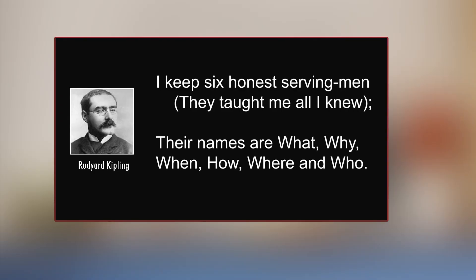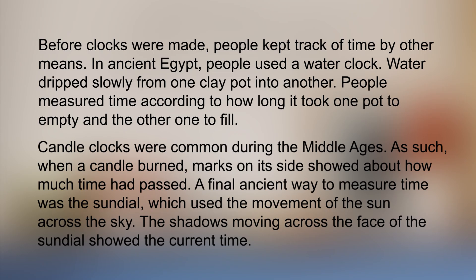In other words, remember Rudyard Kipling's Six Honest Serving Men: I keep six honest serving men, they taught me all I knew, their names are what and why and when and how and where and who. So let us look at the paragraph. Before clocks were made, people kept track of time by other means. In ancient Egypt, people used a water clock — water dripped slowly from one clay pot into another, and people measured time according to how long it took one pot to empty and the other to fill. Candle clocks were common during the middle ages; as a candle burned, marks on its side showed about how much time had passed. A final ancient way to measure time was the sundial, which used the movement of the sun across the sky, and the shadows moving across the face of the sundial showed the current time.